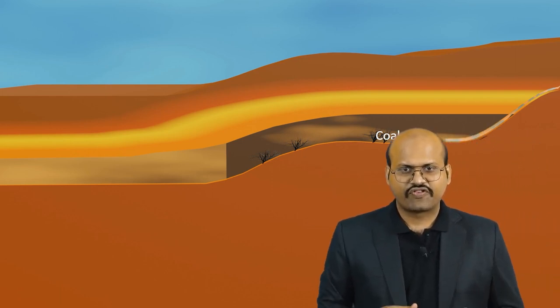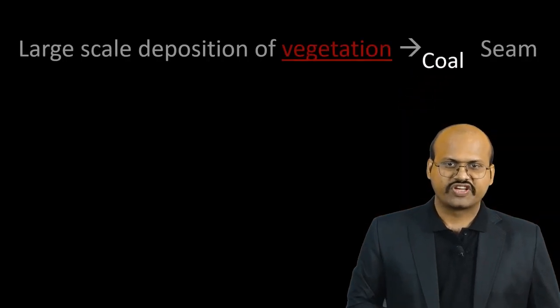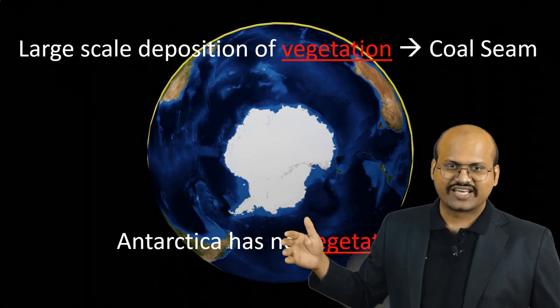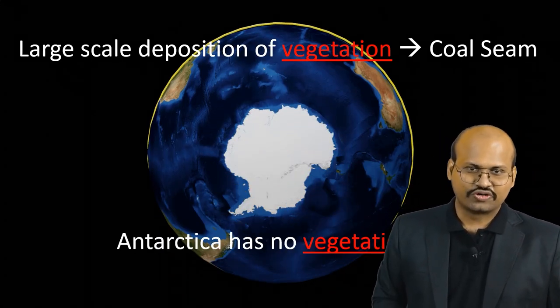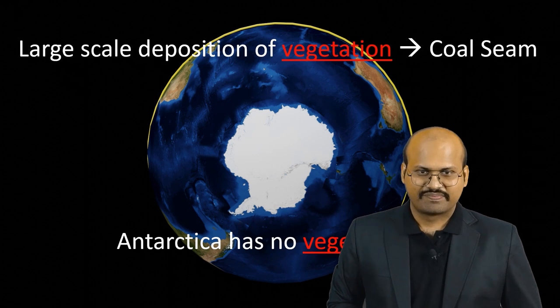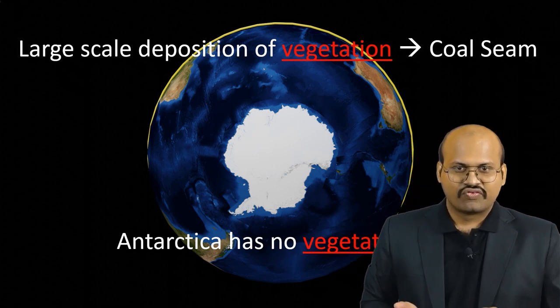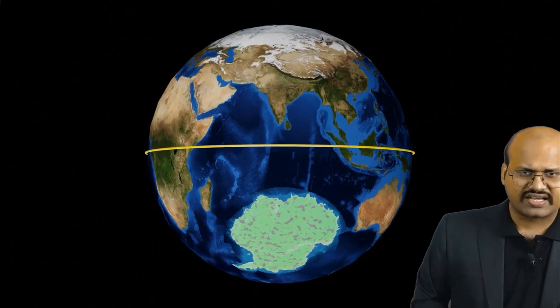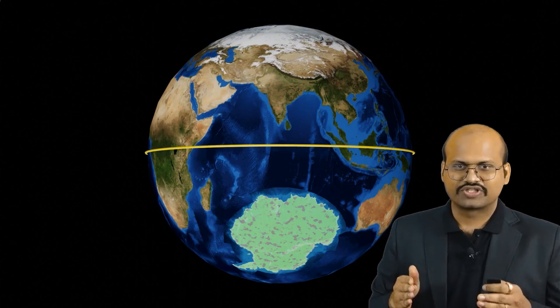For formation of a coal seam, we need a large amount of vegetation. But when we look at Antarctica, we see there is no vegetation. Due to its location, it is not possible for Antarctica to have had large vegetation even in the past. For formation of coal, we require deposition of large-scale vegetation. Therefore, Antarctica in the past must have been located away from the poles, somewhere closer to the equator, where it could support large vegetation. Thus, Antarctica must have moved from there to its current position near the poles.